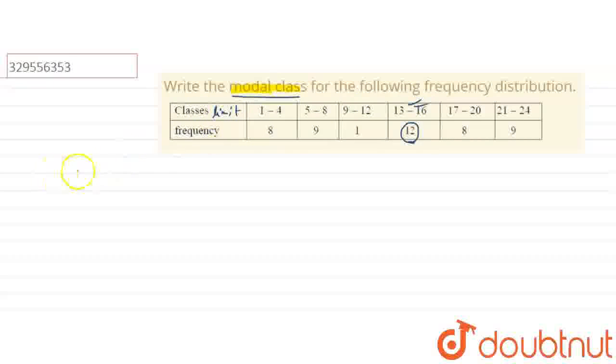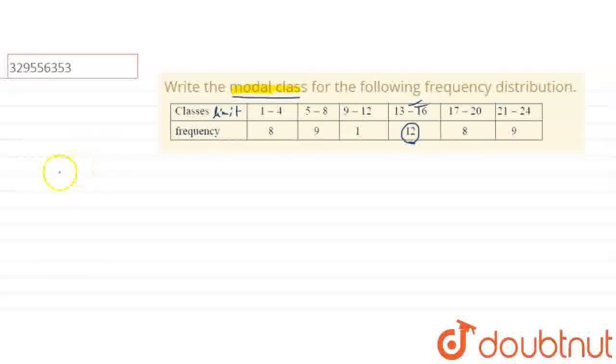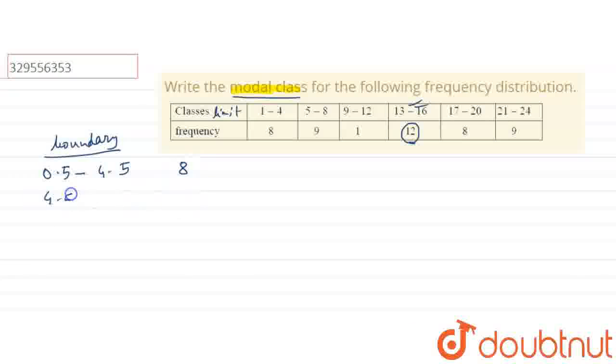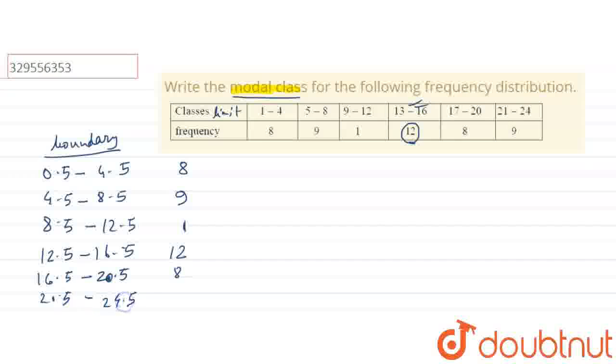We have a limit here. We will change to boundary. We have 4.5 or 0.5 to 4.5, then 4.5 to 8.5 with frequency 8, then 8.5 to 12.5 with frequency 9, then 12.5 to 16.5 with frequency 12, then 16.5 to 20.5 with 8, and 20.5 to 24.5 with 9.